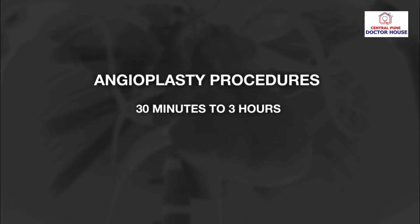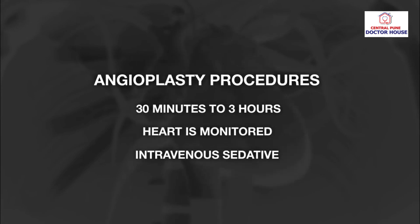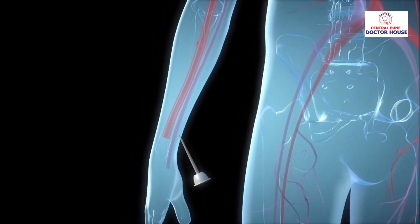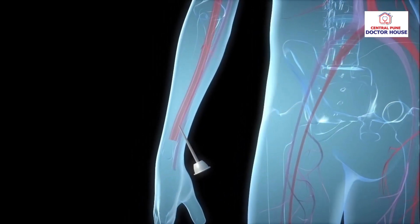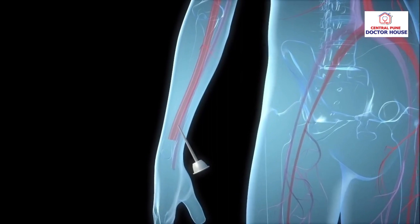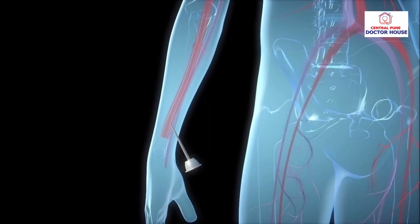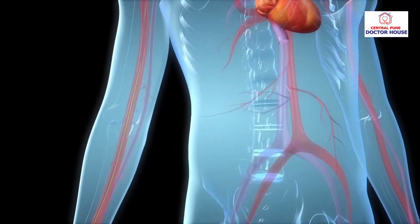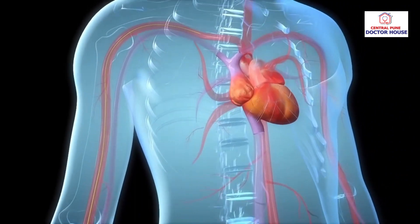Once the patient is admitted, their heart is monitored and they are given an intravenous sedative to relax the body. A needle is then inserted through the wrist into the radial artery, and a guide wire is passed through the needle.